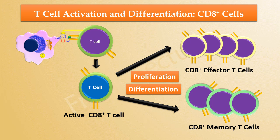Effector CD8-positive T-cells are cytotoxic T-cells that attack body cells affected by the pathogen or antigen. Memory T-cells are able to quickly proliferate and differentiate into more effector cells and memory cells if the same pathogen infects in the future.